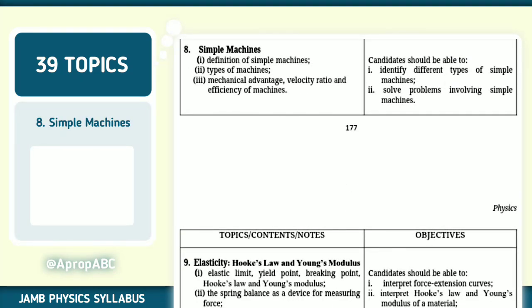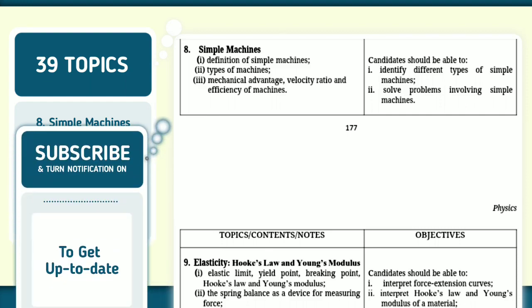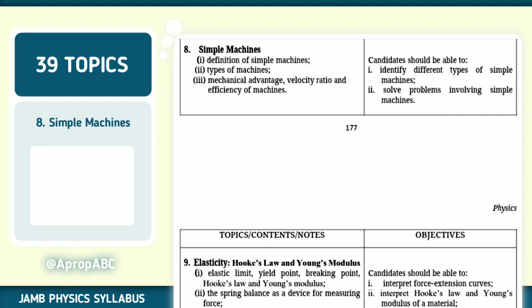Then we have simple machines. Definition of simple machine, types of machine, mechanical advantage, velocity ratio, and efficiency of machine. Check that out as well. And check the objectives under them.